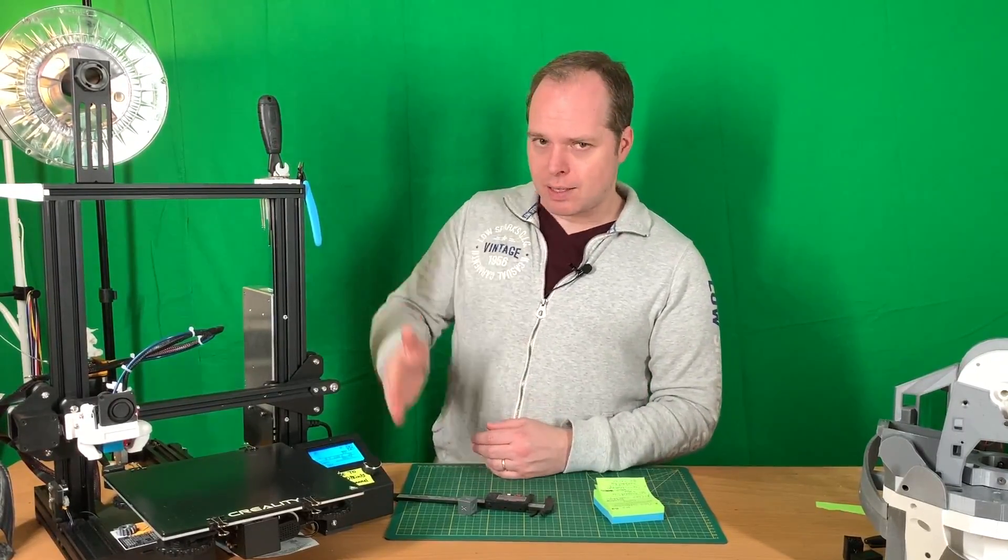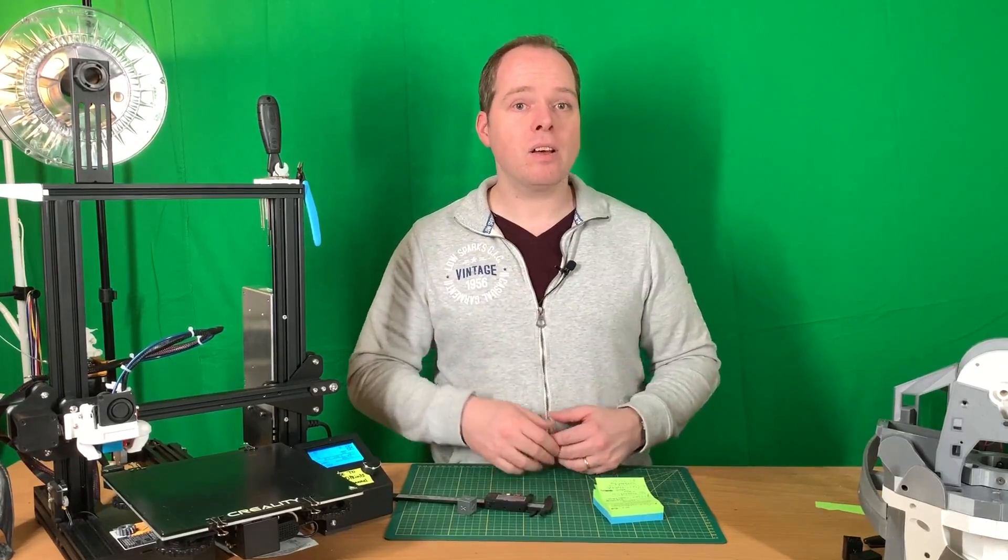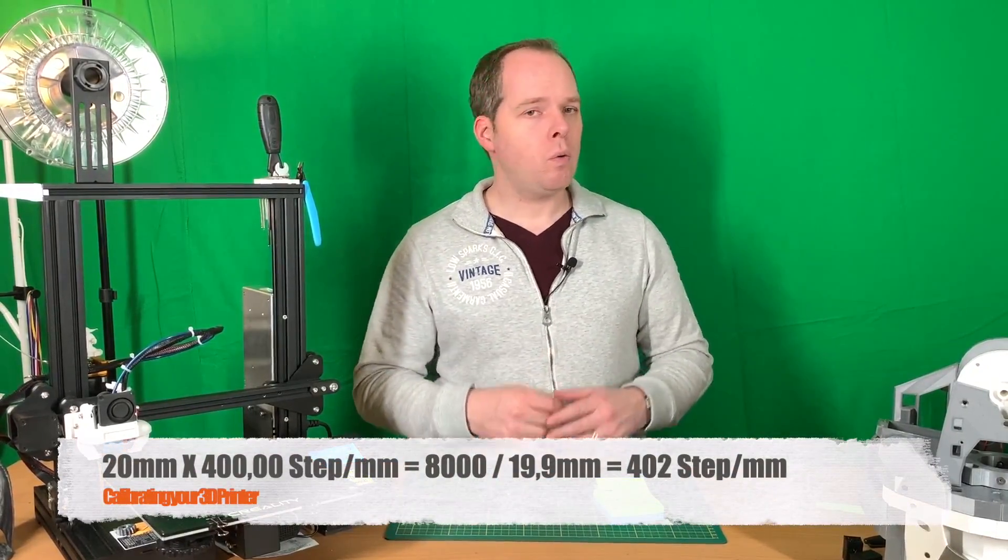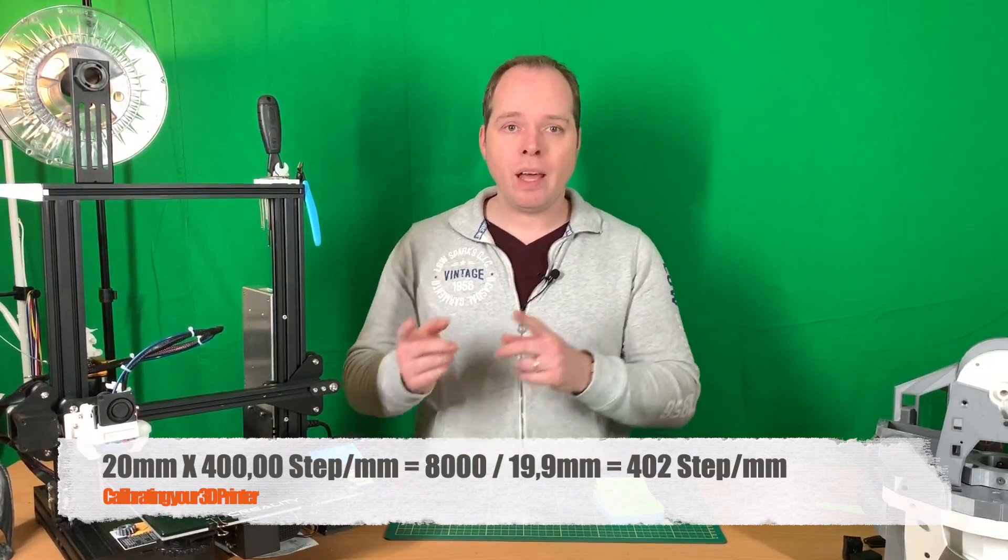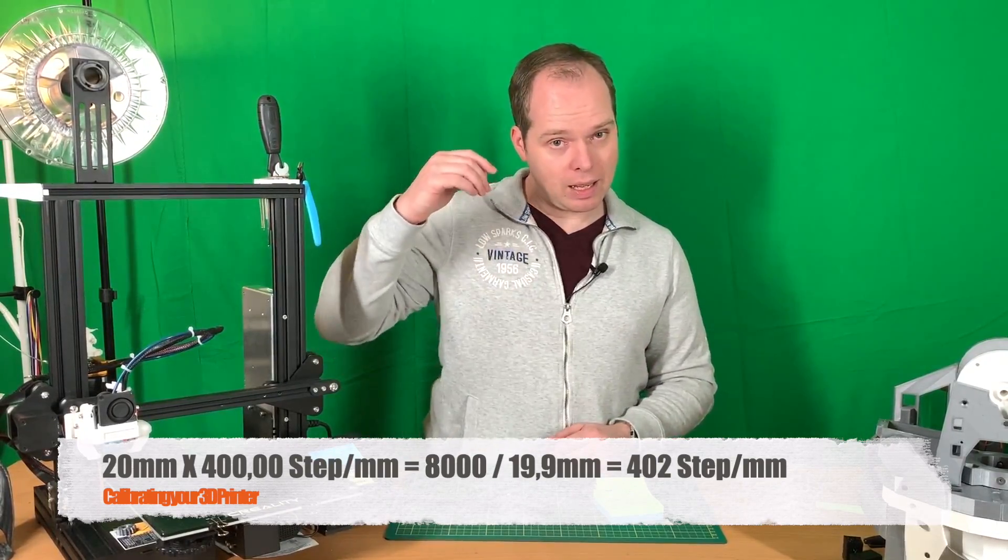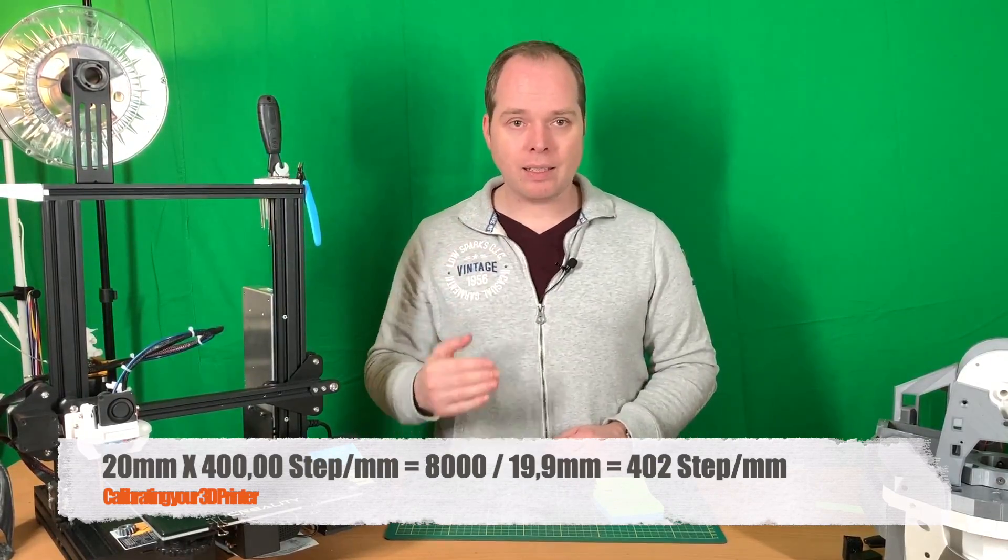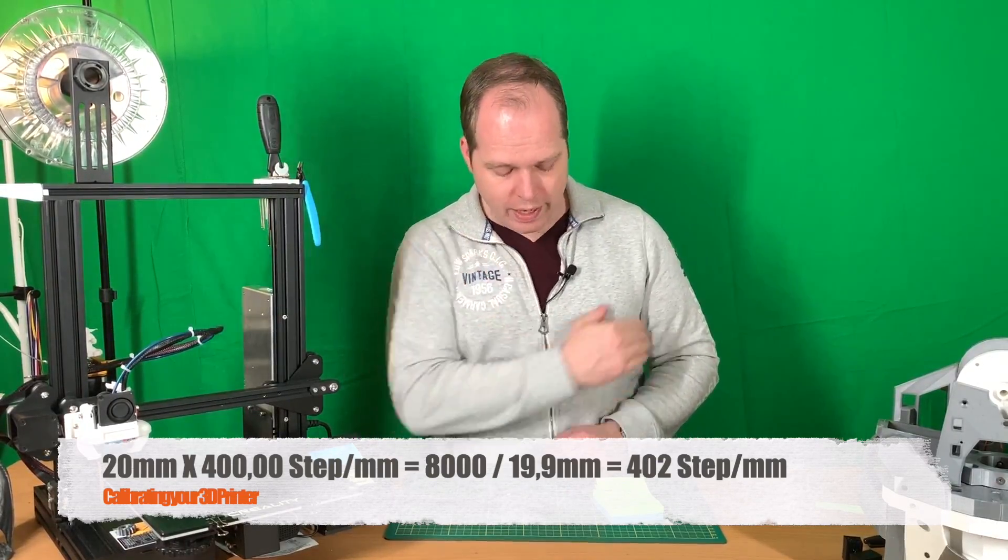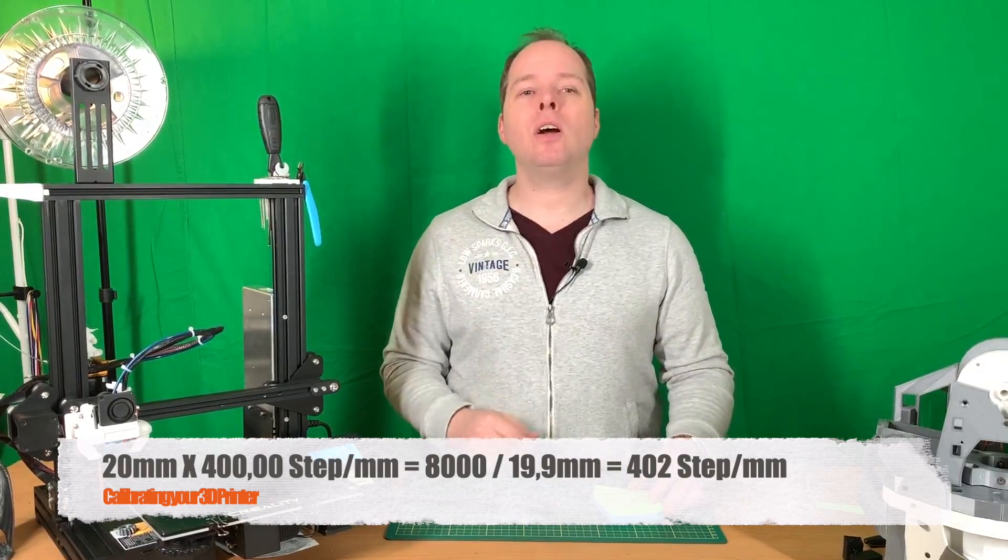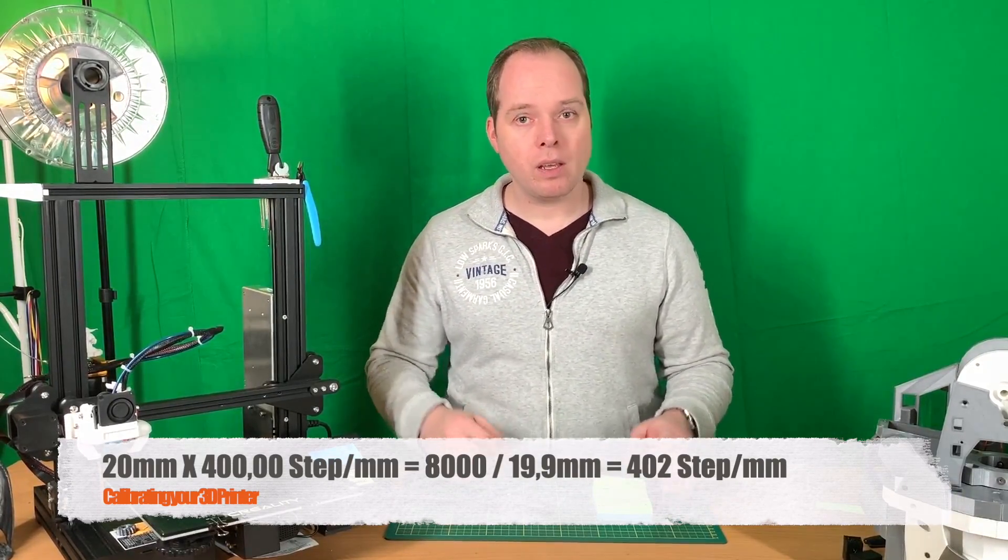For the Z-axis, it's the height, and the height is 400. When we multiply it by 20, we get 8000. Then we divide the 8000 by the 19.9, and we get 402.